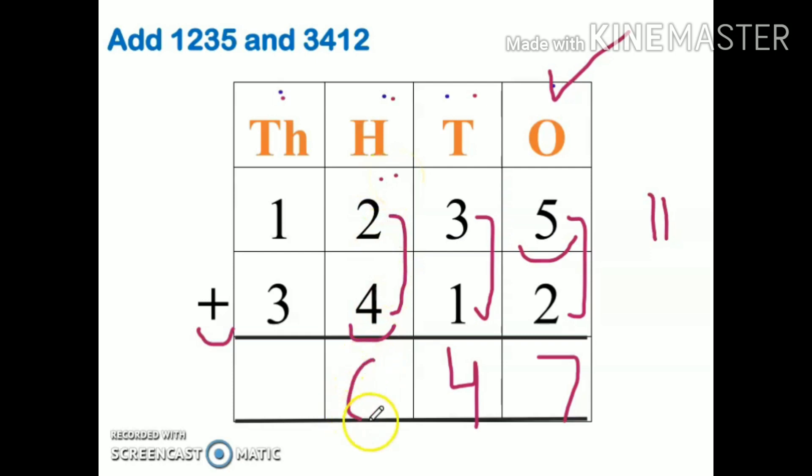Three plus one equals four. So my answer is four thousand six hundred forty-seven. It's very simple. Don't forget to start your sum from the right hand side, from one's place, then tens, then hundreds, and so on.